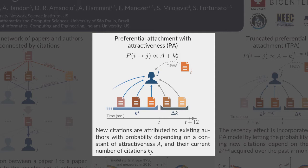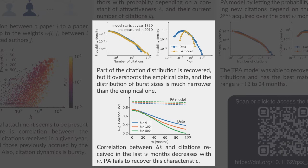We simulated a simple preferential attachment model with attractiveness in which the probability of an author to receive a citation depends on a constant and on the total number of citations obtained previously. The model was able to recover partially the citation distribution, but failed completely for replicating the burst-size distribution.